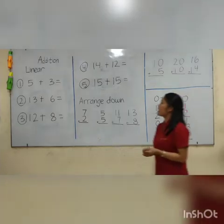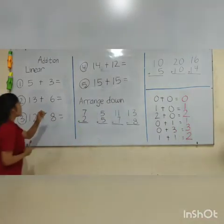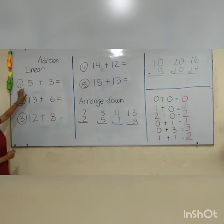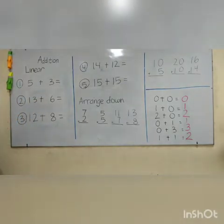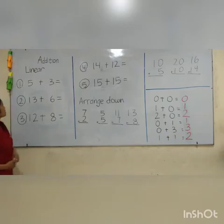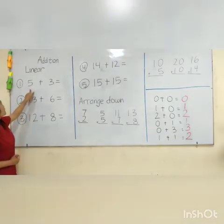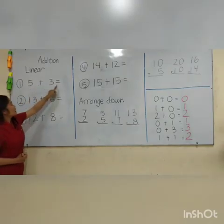Now let's discuss the first question. Here we have a single-digit number, which means there is no need to draw a line. Let's do it directly, because this one has only one number. So: 5 plus 3 equals...